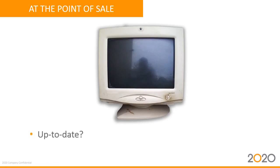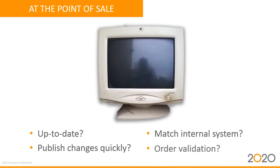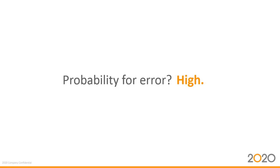Let's compound the problem. Maybe your dealers are using a system to configure orders. Is the system up to date? Can you publish product changes or new product lines quickly? Does that system match your internal order system? Does it validate feature selections for them so they can't order that maple door with dark stain? Does it make sure they're not choosing a 24-inch drawer insert when they've ordered a 30-inch drawer? It's so easy for disconnected systems to fall behind on maintenance and updates, and it's difficult and expensive to program every nuance of a product line into a system that wasn't intended for this industry, or that uses outdated or insufficiently robust technology. What's the probability for error? High.